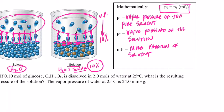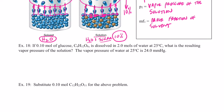When I multiply the vapor pressure of my pure solvent times the mole fraction of my solvent, I get a new vapor pressure that will be lower. Let's work a problem: say I have 0.10 moles of glucose dissolved in 2.0 moles of water at 25°C. What is the resulting vapor pressure of the solution? The vapor pressure of pure water at 25°C is 24.0 mmHg. Will the vapor pressure be higher, lower, or the same?